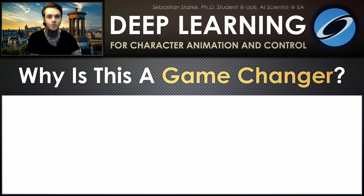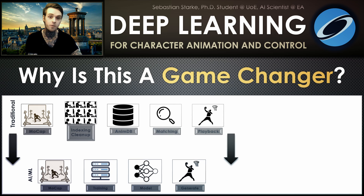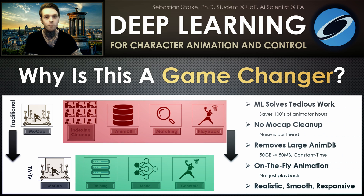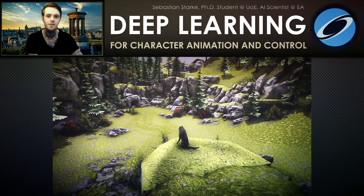Now, why is this research a game changer for industry? Usually a lot of data cleanup and careful storage is required to play back animations. But with AI we can directly learn the motion from the data to generate the animations on the fly. That avoids a lot of tedious work, achieves significant data compression, and returns realistic character controllers ready to use. And finally, in animation it is all about flattening the curves to stay within budget while bringing more content into the games. Thank you.